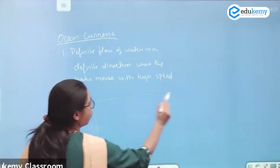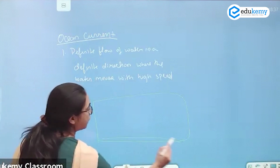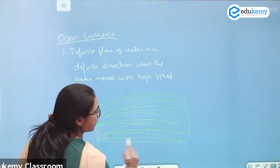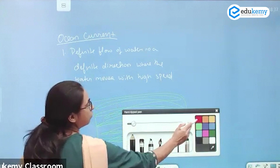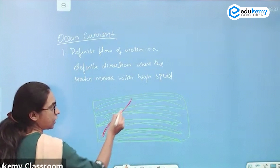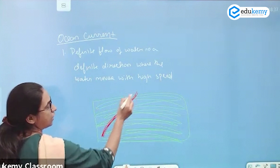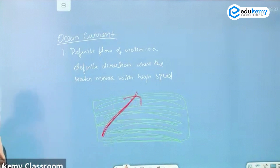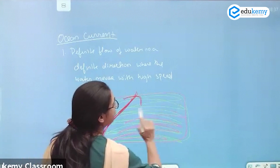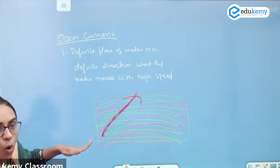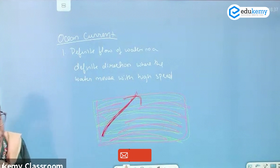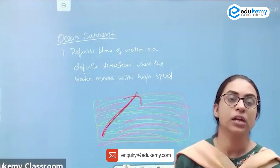If I say this is your ocean — this is the entire ocean — in this entire ocean, there is one direction in which the water is continuously moving at a high speed in a definite pattern. The water is moving in a definite direction and with high speed. That you will call the ocean current.